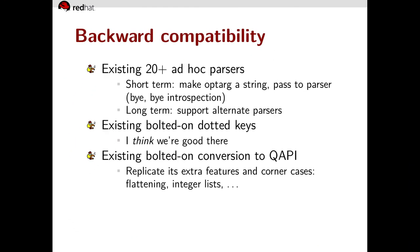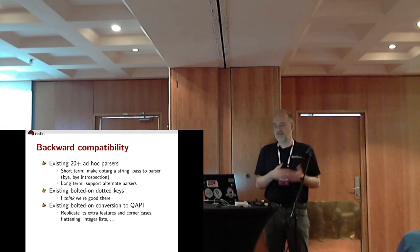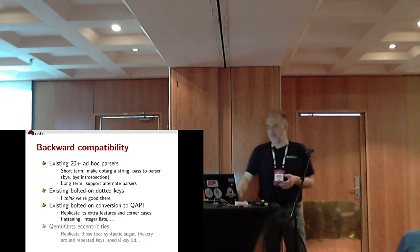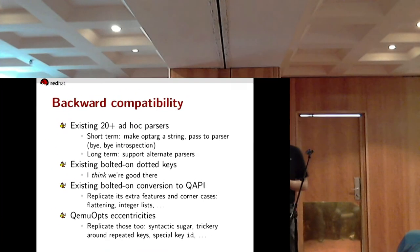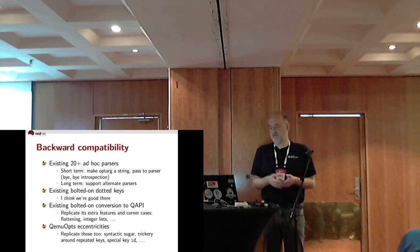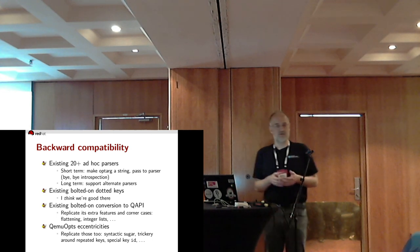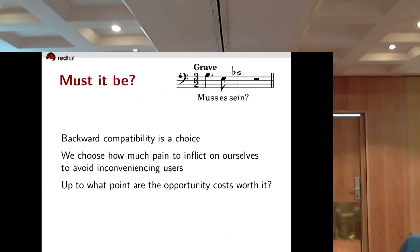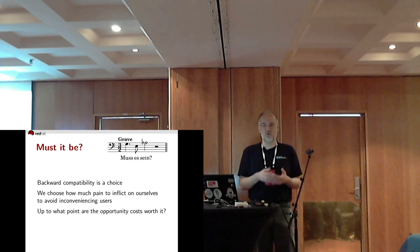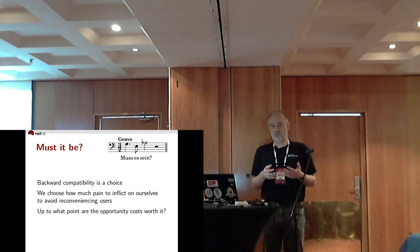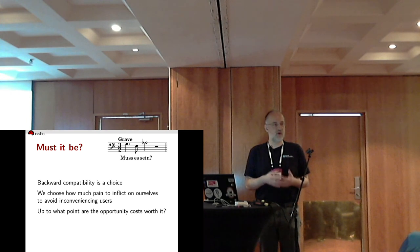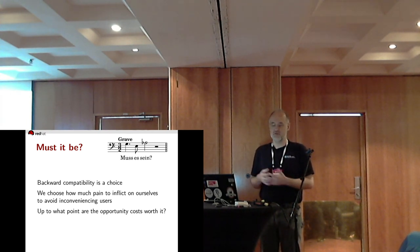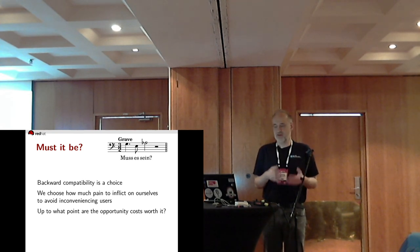We want to stay compatible to the existing bolted-on conversion to QAPI, and that means we get to replicate its extra features and corner cases such as automatic flattening, special syntax for integer lists, and so forth. And of course we want to stay compatible to all the QEMUopts eccentricities we've acquired over the years — various syntactic sugar, trickery around repeated keys, special semantics for key 'id', and it goes on. At this point it's fair to ask: must it be? Do we have to do all this work for backward compatibility? Well, backward compatibility is a choice. We choose how much pain to inflict on ourselves to avoid inconveniencing our users. Up to what point are the opportunity costs worth it? That's a question the community needs to decide.